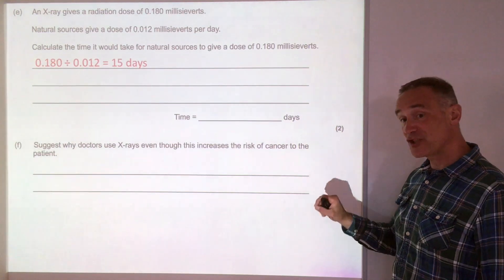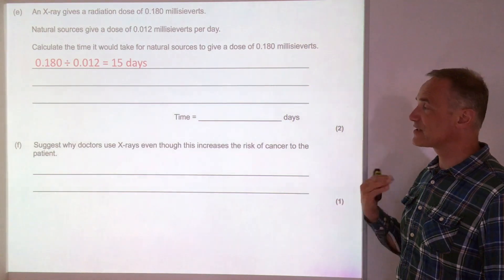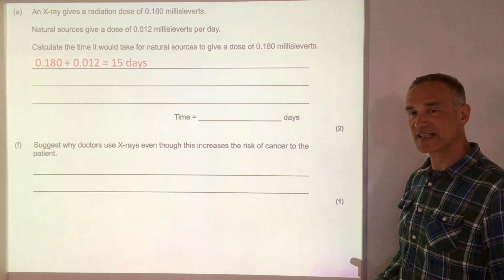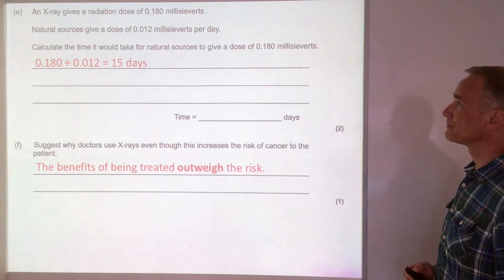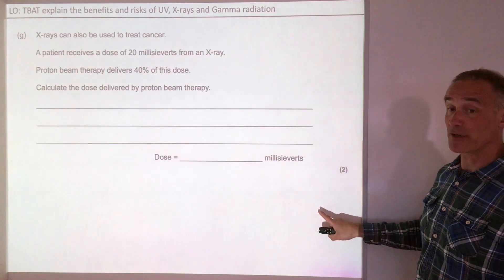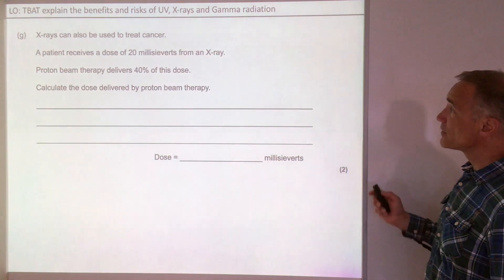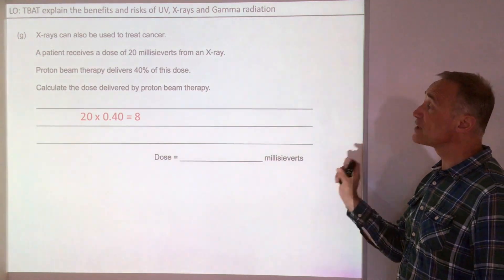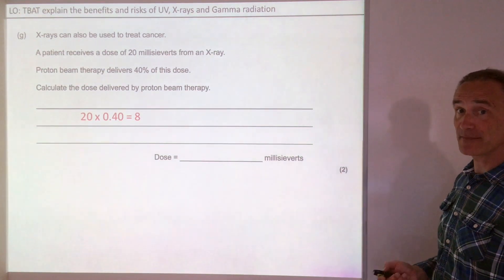Finally there's a percentage question. We want to know 40% of 20. The easiest way is to think of 40% as 0.4 in decimal, so it's 0.4 × 20 which is 8 millisieverts.